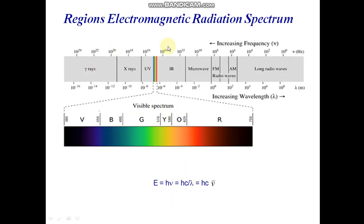Region of Electromagnetic Radiation Electromagnetic Radiation spectrum. This is the gamma ray, x-ray, UV, IR, microwave, radio wave.